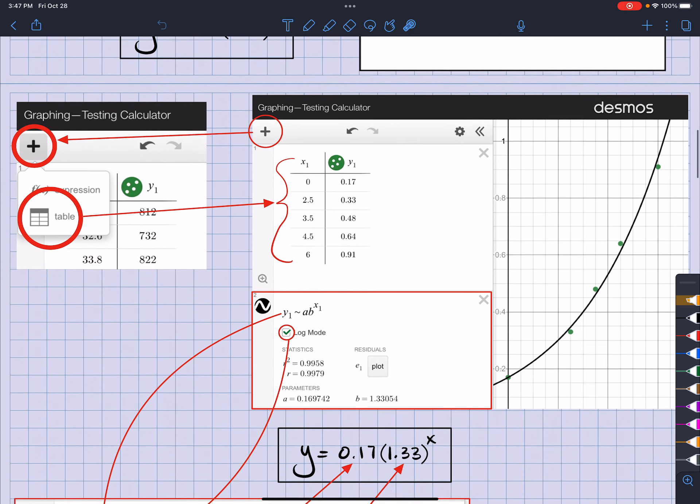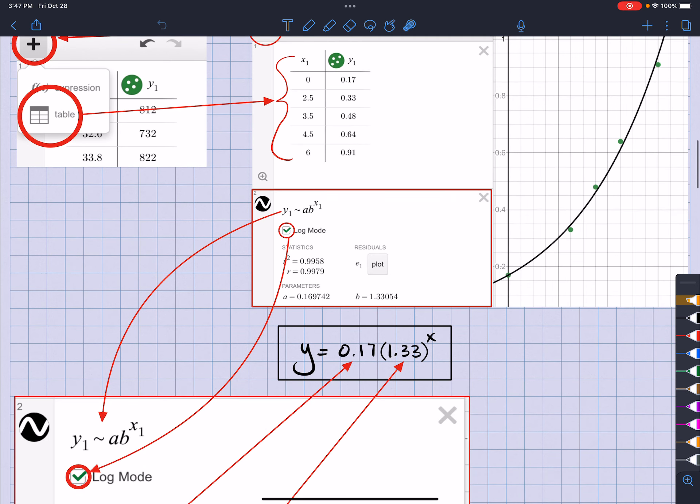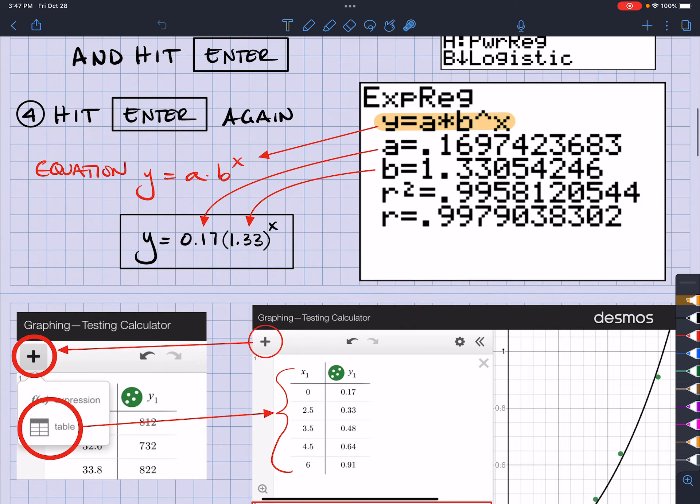just as easy, we're going to hit the plus sign and select table so that we can enter the table, as you can see here. And then, on the next line, we're going to type in that exact equation that we saw up here.